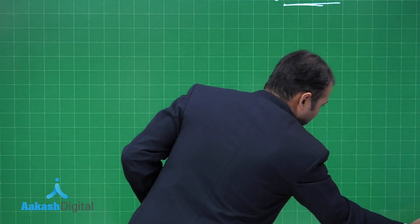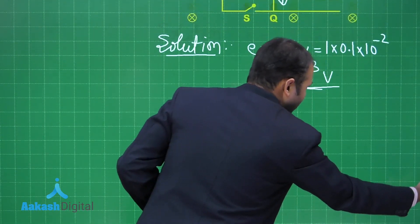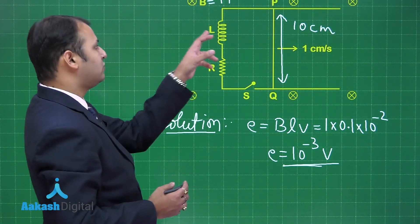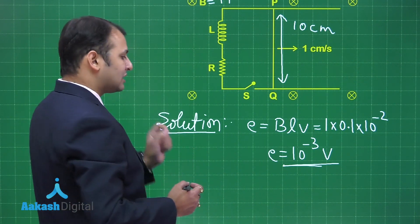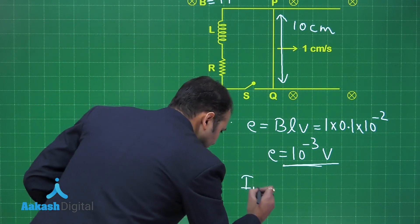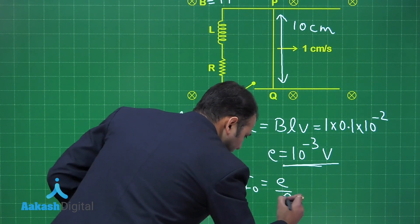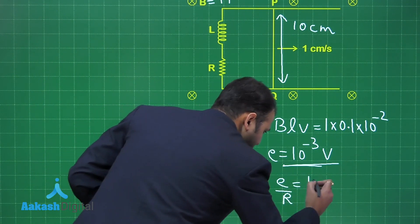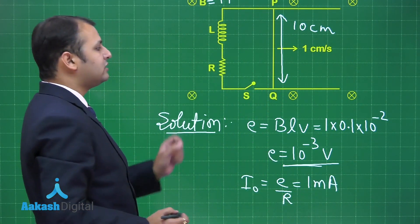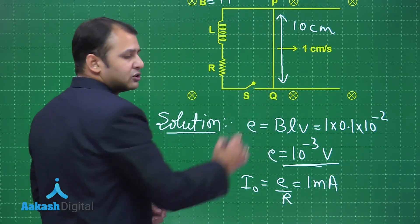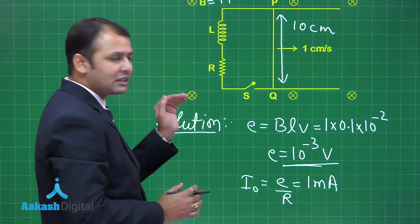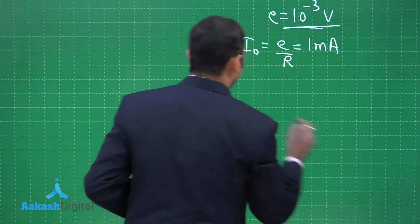Through an inductor, if there is a steady current established, the inductor will have no effect. So the maximum current possible through the circuit would be E upon R, which equals 1 milliampere.